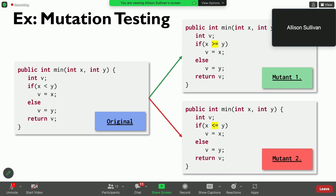However, for mutant two, no input will distinguish it from the original program. It happened to be a logically equivalent change to the program. We call that an equivalent mutant, and it's a really hard problem to solve in these imperative programming languages.